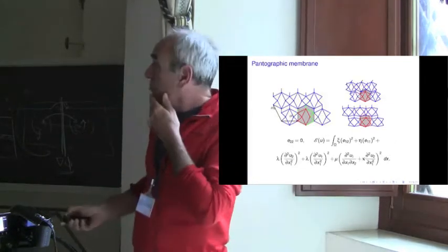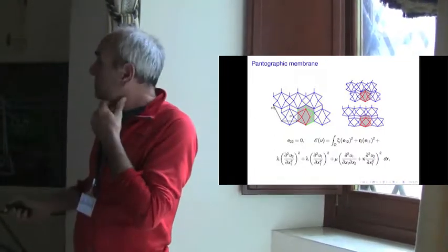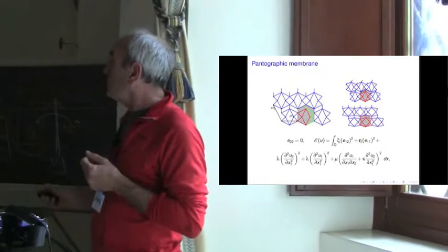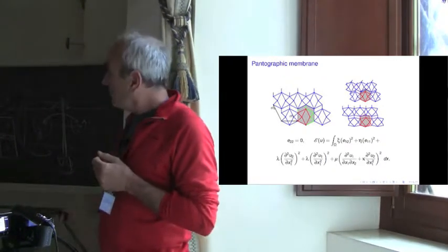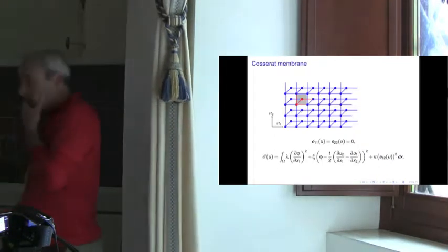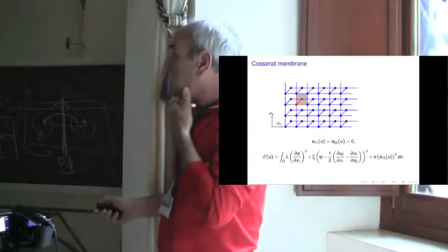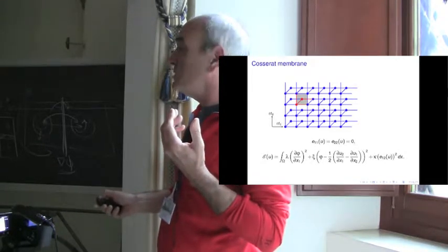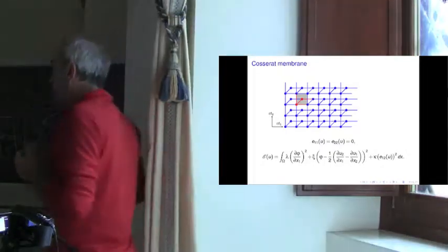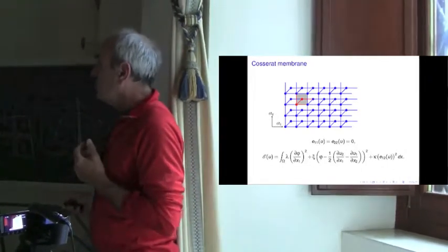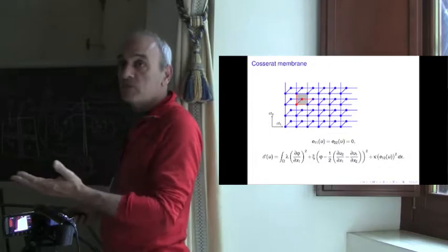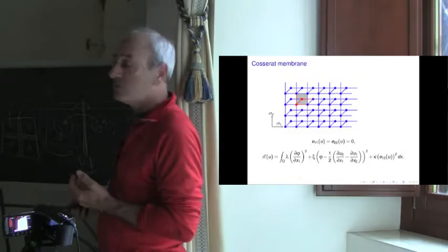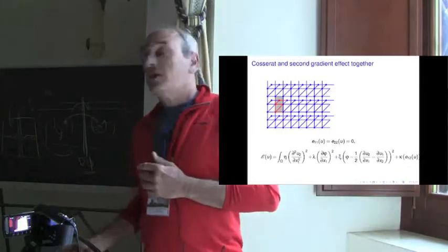Now, the pantograph membrane — we are plugging different pantographs above, and when you pass to the limit, we get a complete second gradient material, which is a bit complicated because you have no symmetry, and you have some coupling. Now, if you consider something like that, in which I have authorized a crossing interaction — so this node interacts with this one, and this one with this one, but the bars are not interacting — then you get, again, inextensibility, but now you get a Cosserat membrane, because here you have an extra variable coming from V-tilde, which is related to the global rotation, coupled with the global rotation, and you pay for the difference. So, you can mix the second gradient effect and Cosserat effects.